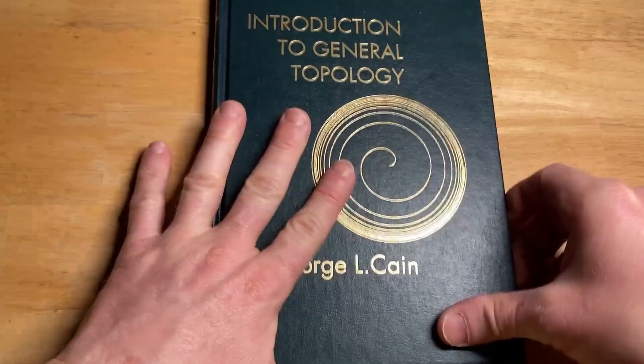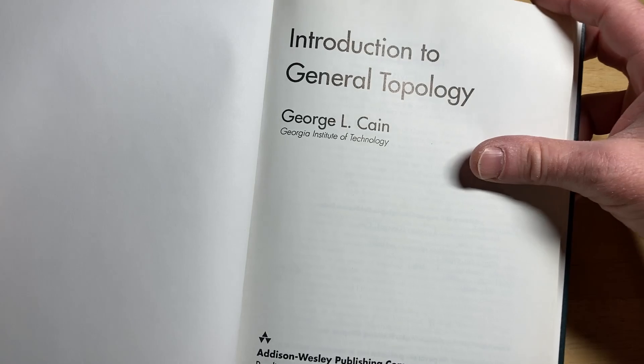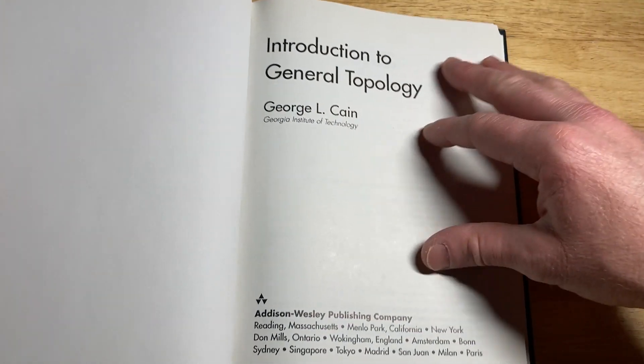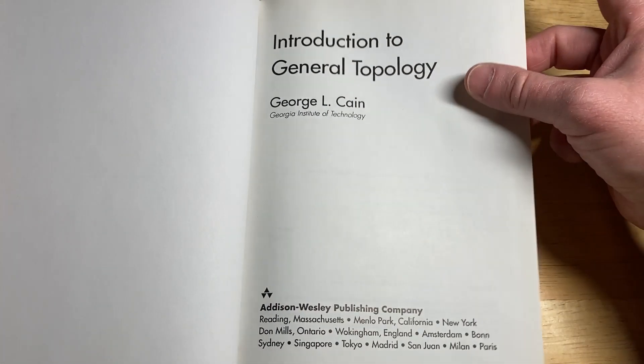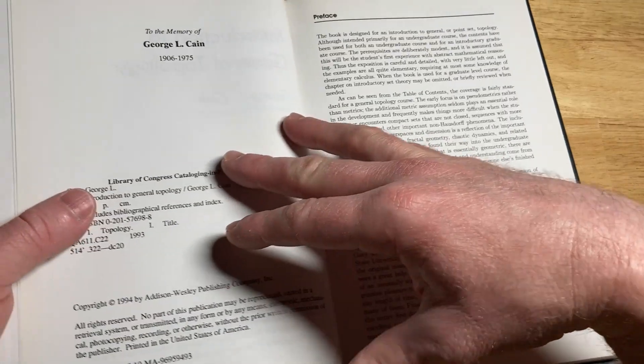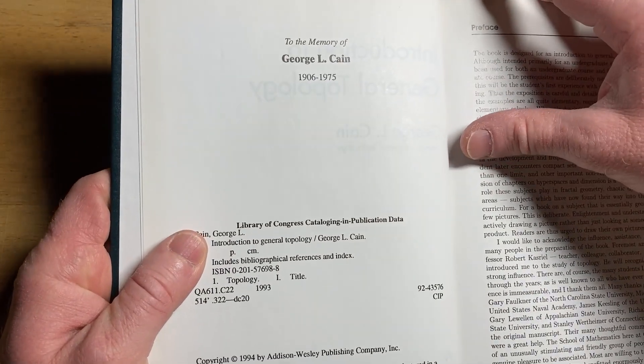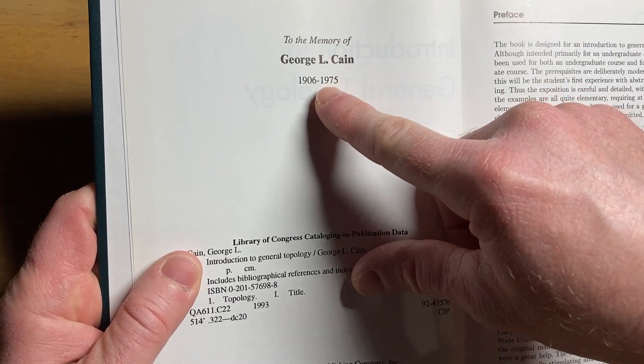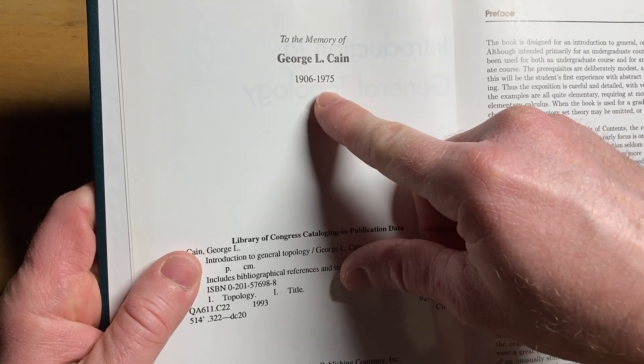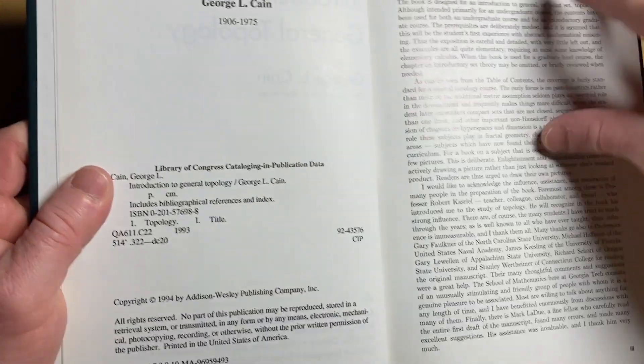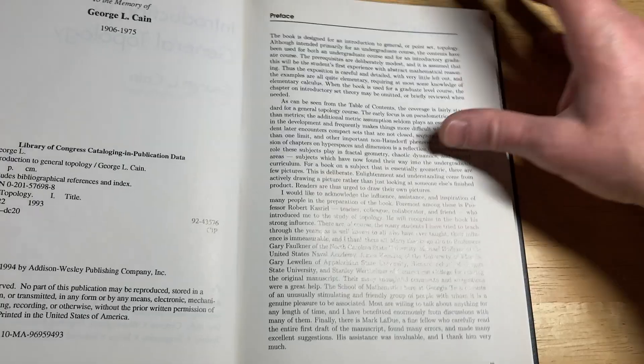But in any case, having a good teacher makes a great impact on your learning experience when you're trying to learn topology. So let's take a look at this book. Georgia Institute of Technology. Someone left a comment, by the way. They asked, why are my books so clean looking? I don't write in my books. Very rarely do I write in my books. To the memory of George L. Cain. He passed away, apparently, 1906 to 1975. And this book is from 1994. So it's an older book.